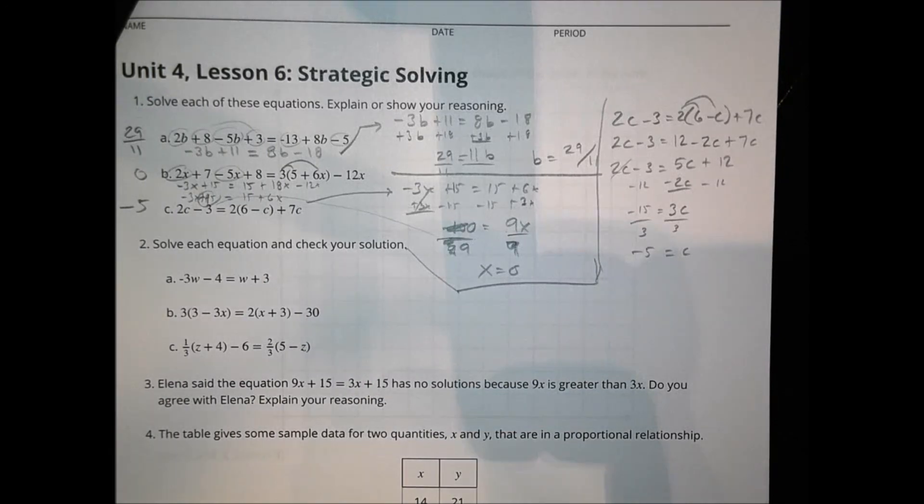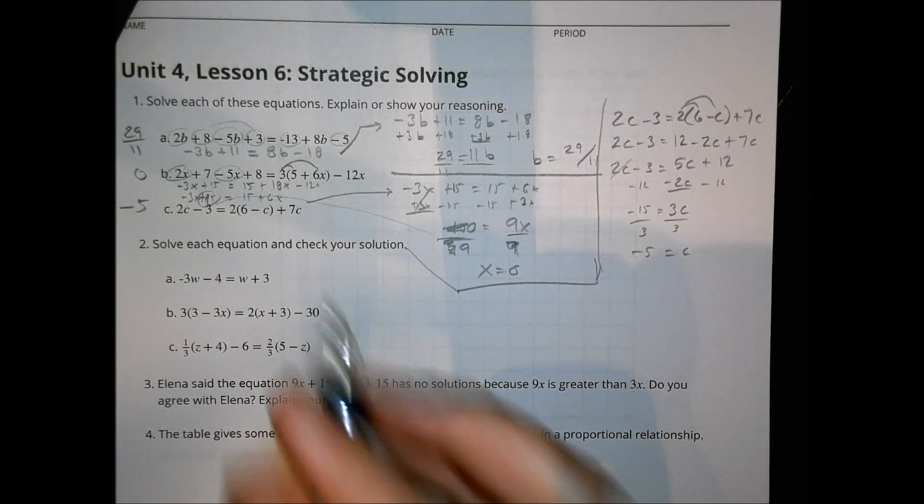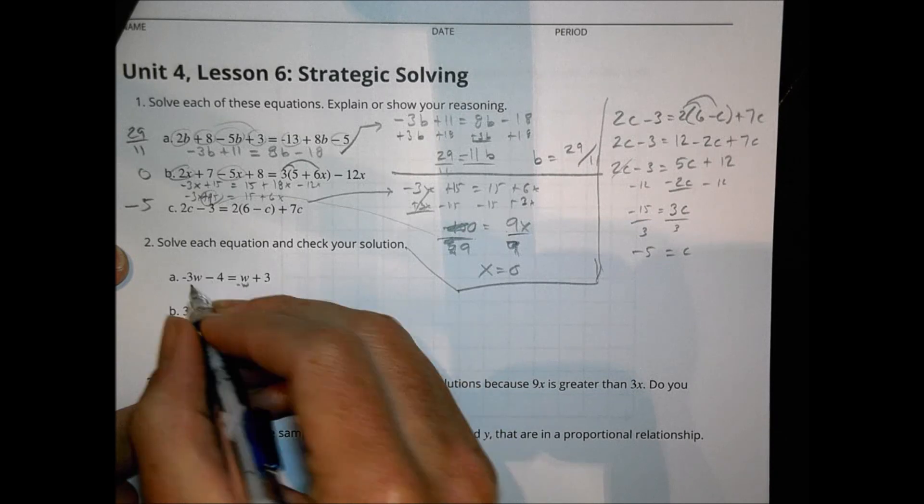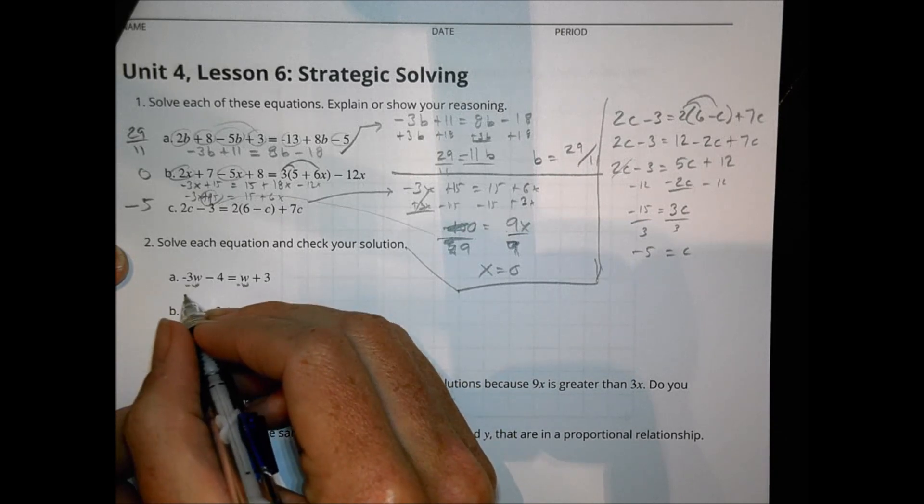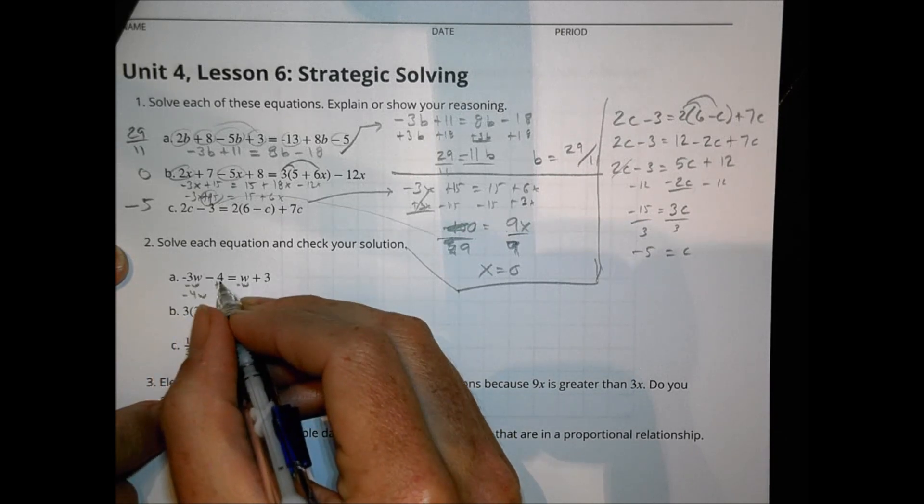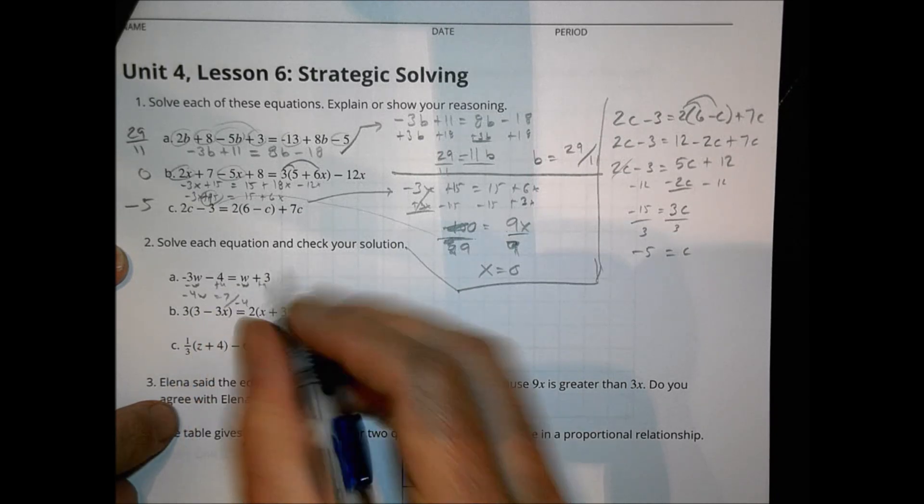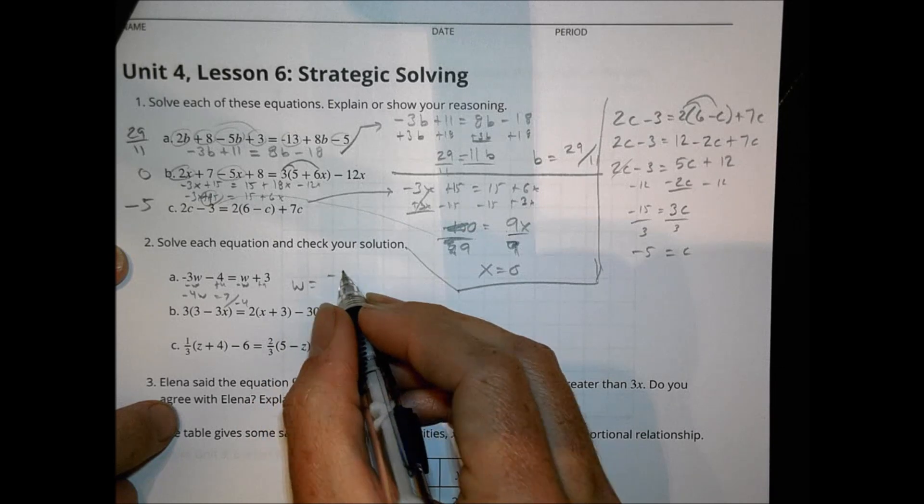Number 2. So solve each equation and check your solution. So same idea once again. So let's go ahead. And we're going to subtract W. So we have a negative 4W. Add 4. Equals 7. Divide by negative 4. So that W equals negative 7 fourths. Kind of a strange answer, but that is the correct answer.